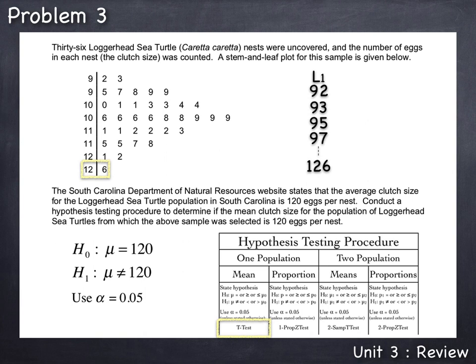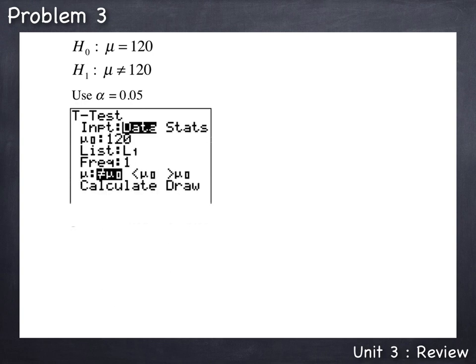Now with all 36 data values entered in list one, we can go to the TTEST command by pressing STAT, arrow over to the TEST command, arrow down and select the TTEST, press ENTER. On the TTEST menu, you're first prompted for what you have to input. The choice is data or stats. Since we entered the actual data into list one, we put the blinking cursor on data and press ENTER.